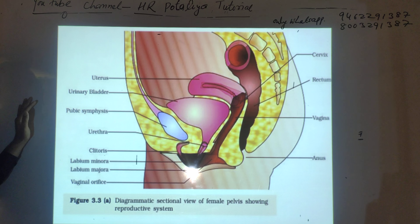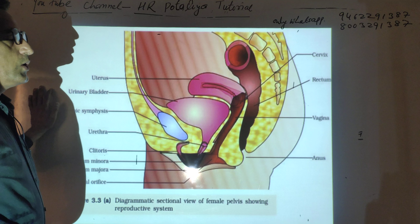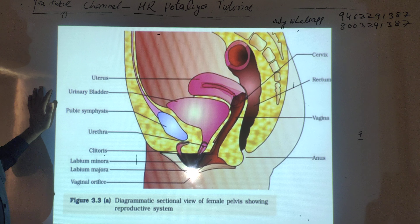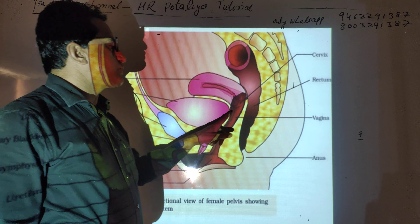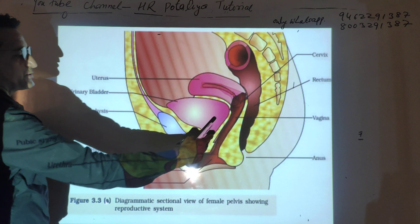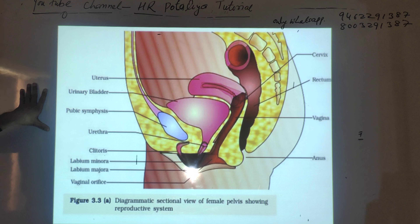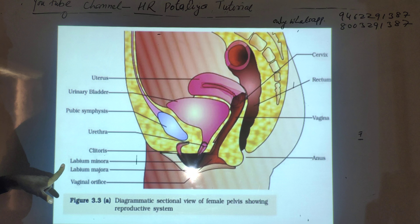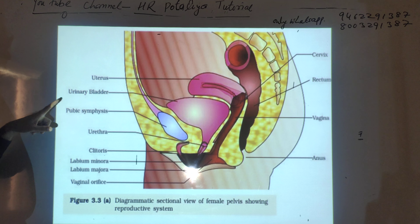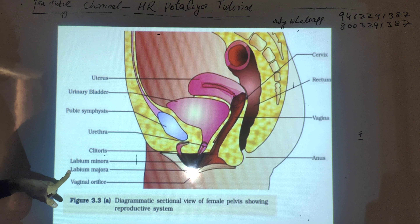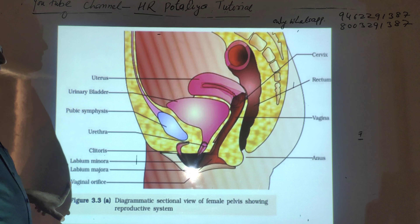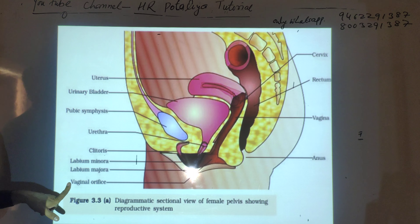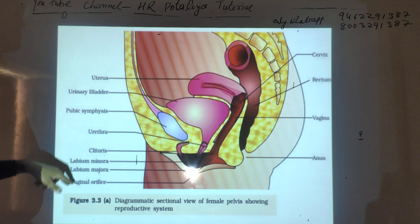The vagina is also called the copulatory or intercourse tube. As the vaginal tube opens outside the female body, that part is known as the external genitalia — the vulva. The vulva consists of four major parts: the pubic symphysis region, labia minora, labia majora, vaginal opening, and the clitoris.